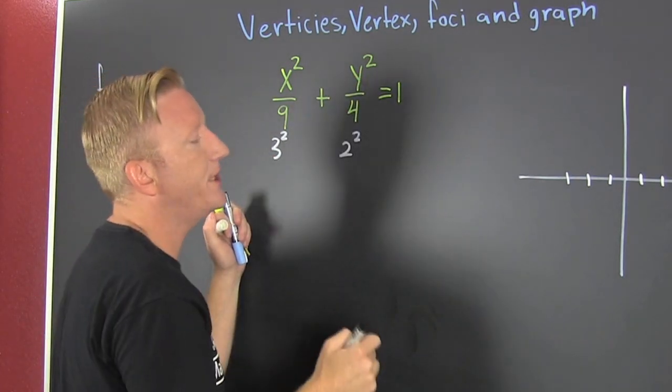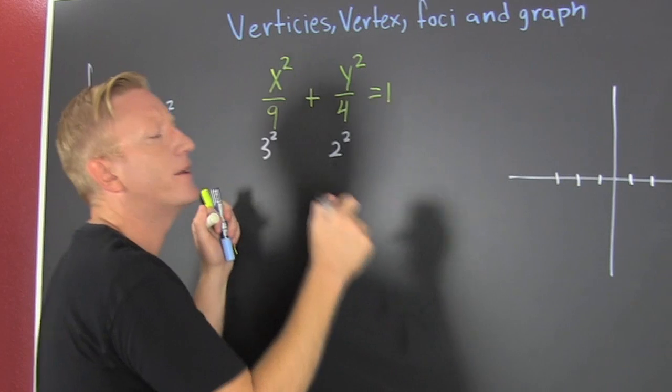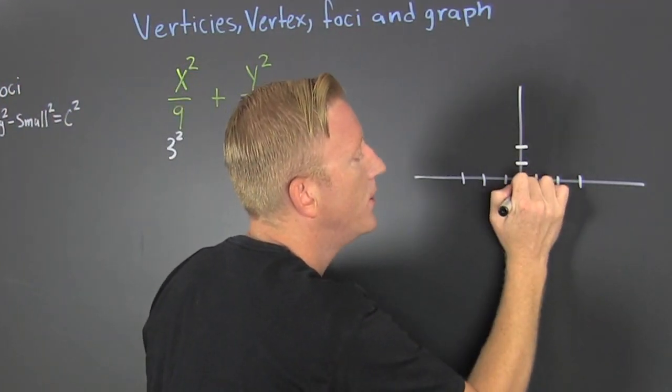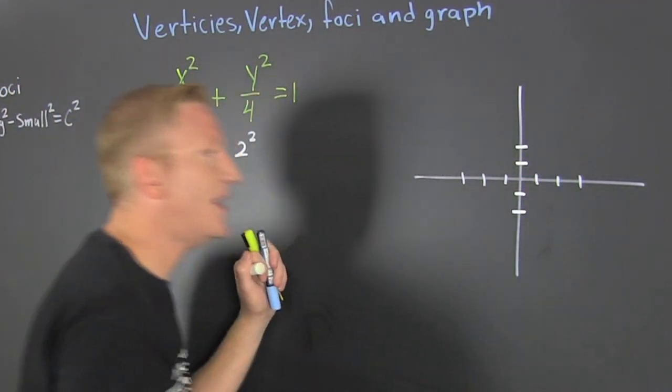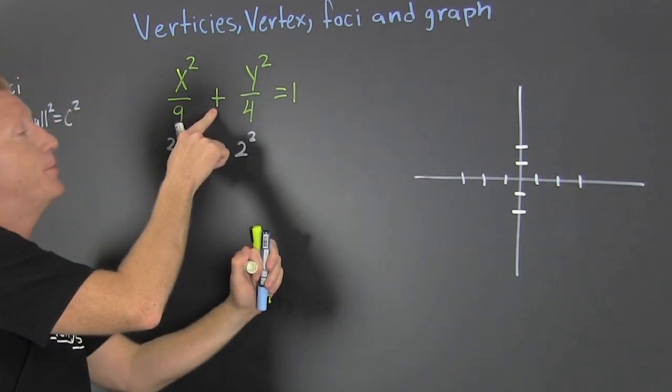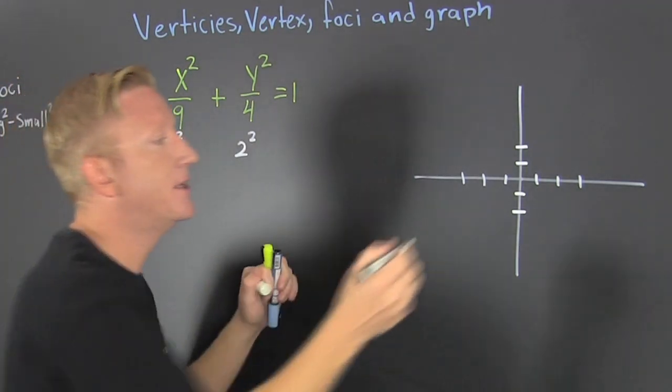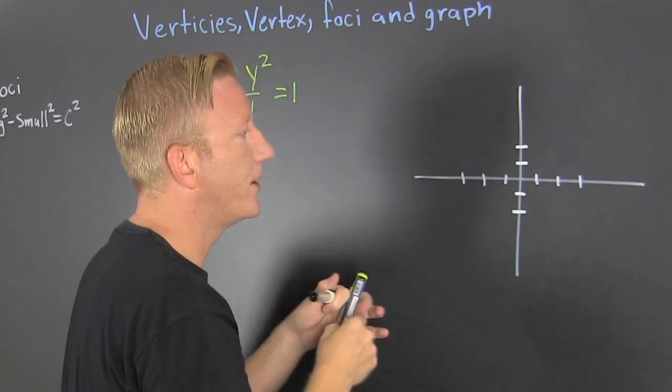So I go three in both the x directions. I go two in both the y directions: one, two; one, two. And then because it's the plus, it's like hugs, and it's all different color.